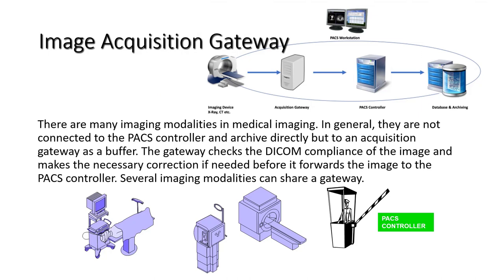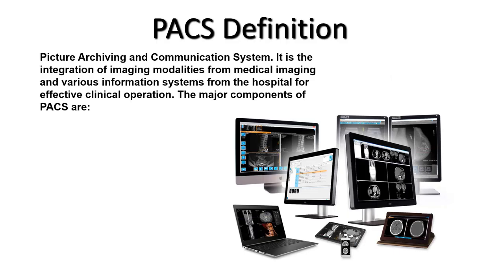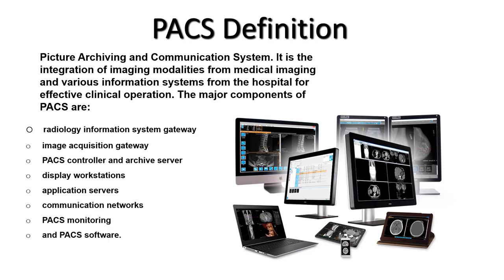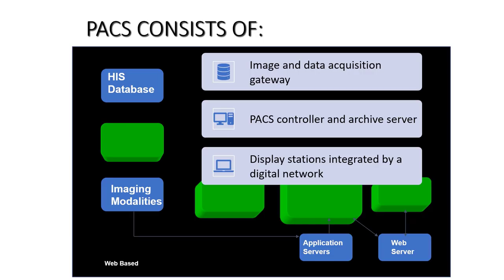A picture archiving communication system is the integration of imaging modalities from medical imaging and various information systems from the hospital for effective clinical operation. The major components of PACS are the radiology information system gateway, image acquisition gateway, PACS controller and archive server, display workstations, application servers, communication networks, PACS monitoring, and PACS software. Here is a graphic representation of a PACS system.